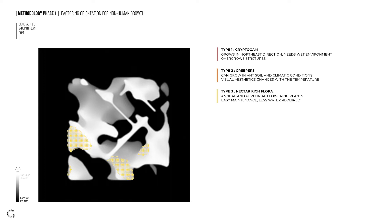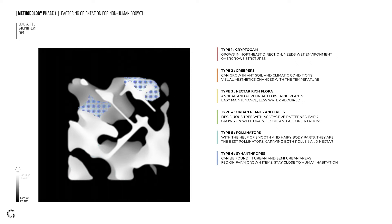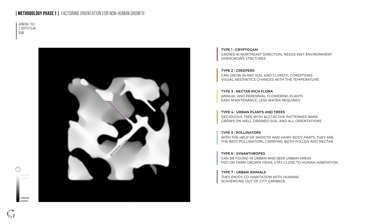Cryptogams grow better on damp, inclined surfaces ideally oriented towards the northeast. Nectar-rich flowering plants could possibly grow on south-facing slopes, attracting pollinators and providing shelters for avifauna on the higher ridges of the slopes. This information is incorporated into the Z-depth plans.